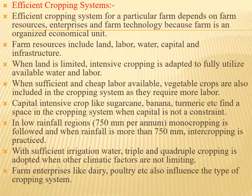In low rainfall regions with less than 750 mm per annum, monocropping is followed. When rainfall is more than 750 mm, intercropping is practiced. With sufficient irrigation water, triple and quadruple cropping is adapted when other climatic factors are not limiting.